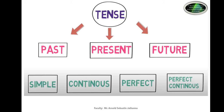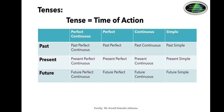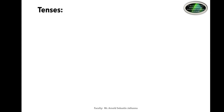Combining all these, there are 12 tenses in total. They are: present simple, present continuous, present perfect, and present perfect continuous; past simple, past continuous, past perfect, and past perfect continuous; future simple, future continuous, future perfect, and future perfect continuous. These are the 12 tenses that play a very important role in the English language.